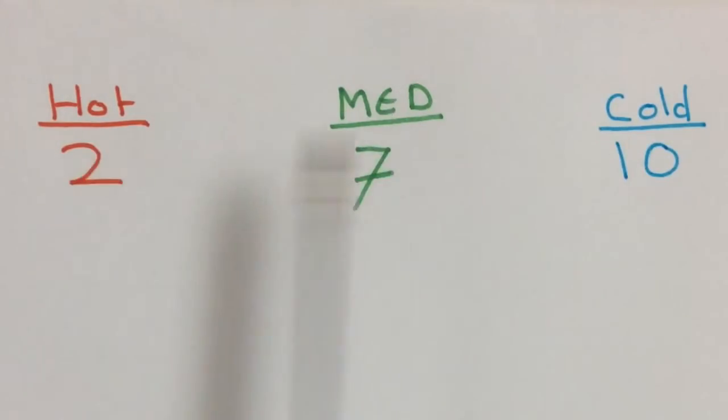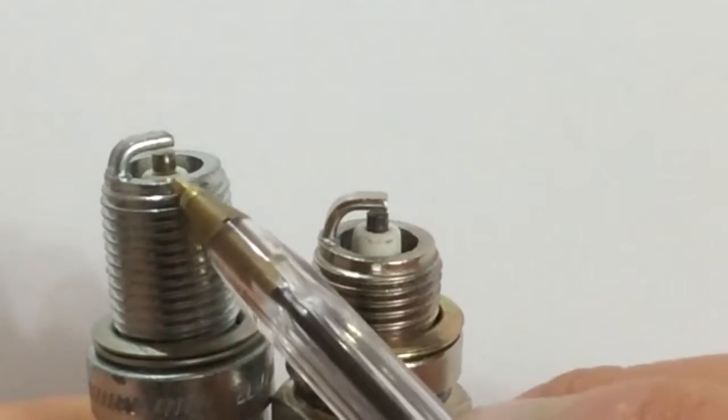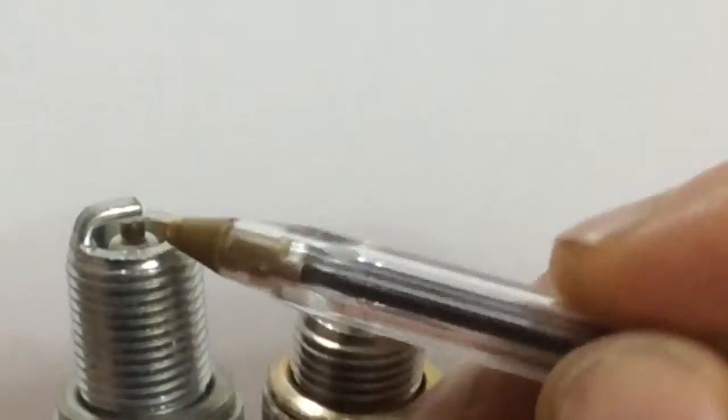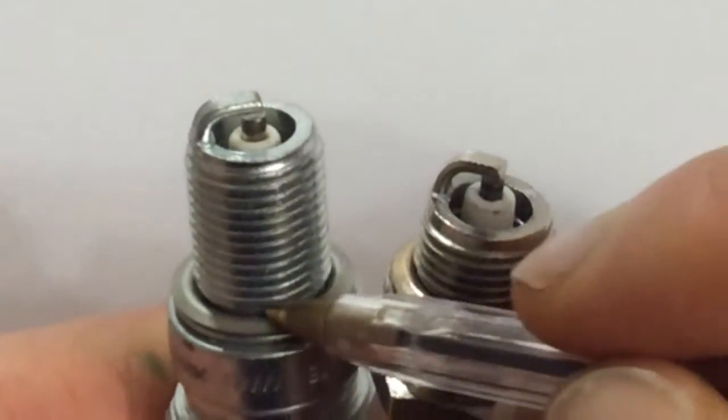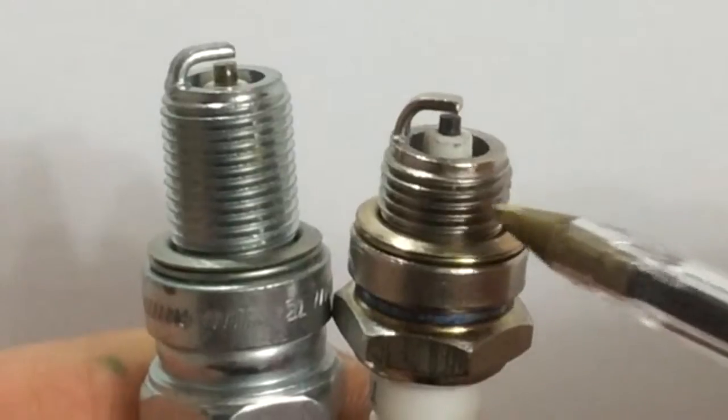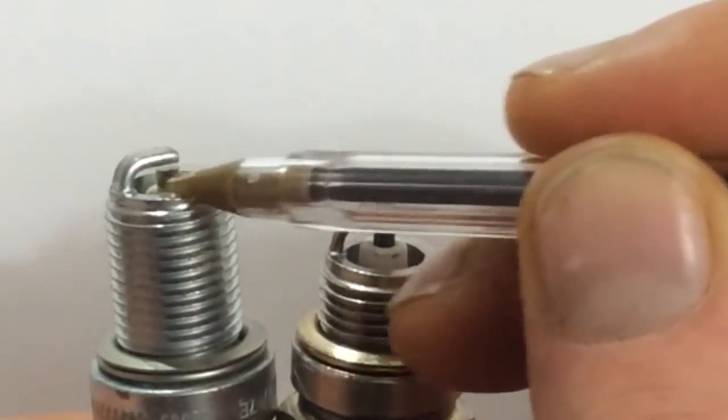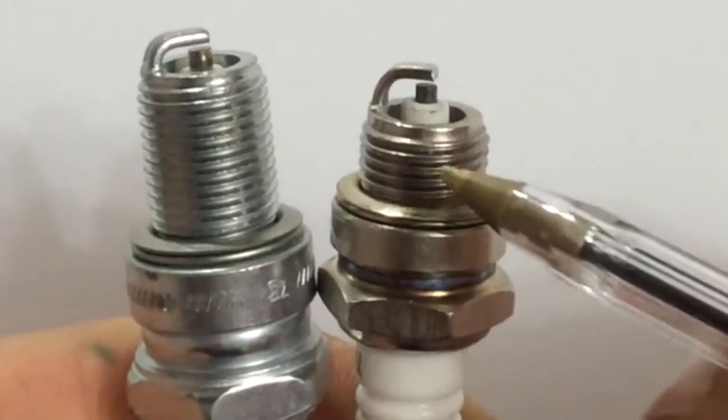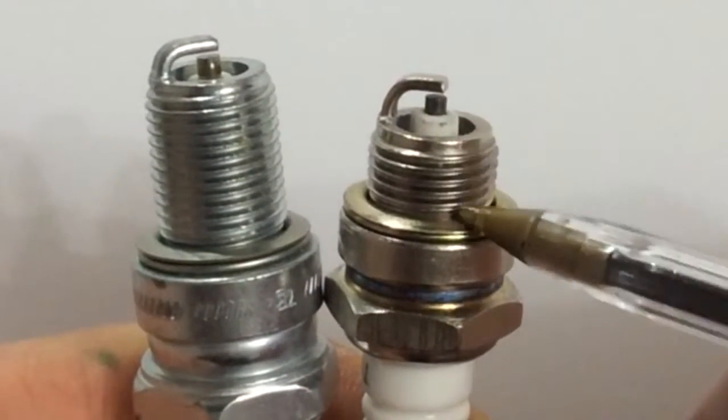Now if we look again at these two plugs in comparison, obviously you can see this one's a lot longer with the thread. Normally the longer the insulator, so if we look down there, it goes right down to the bottom, the hotter the plug runs. This plug runs hotter and can burn away a lot of the carbon to prevent any arcing across.